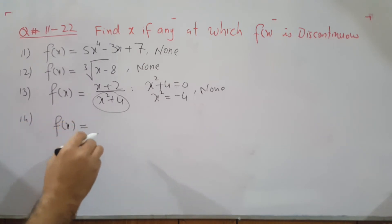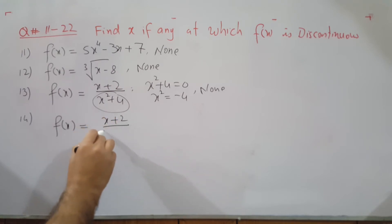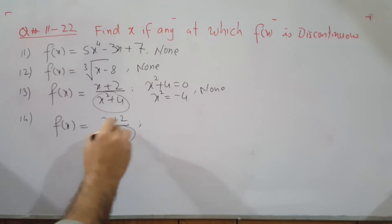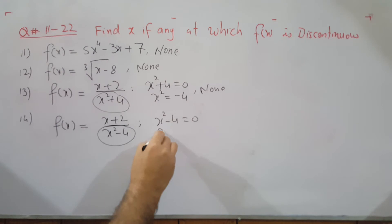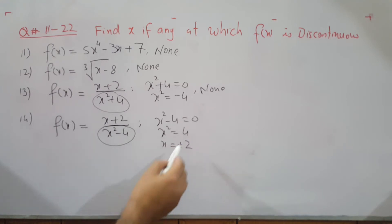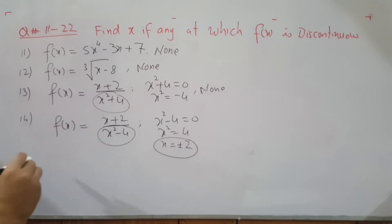Question 14: (x+2) divided by (x²−4). Set the denominator equal to zero: x² equals 4, so x equals ±2. Therefore the function is discontinuous at x equals +2 and x equals −2.